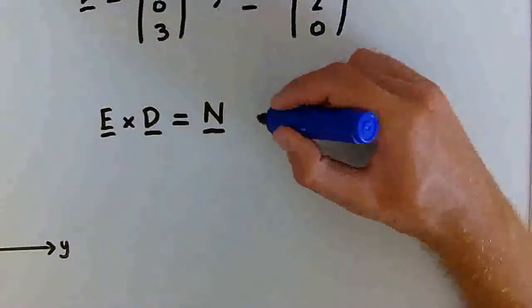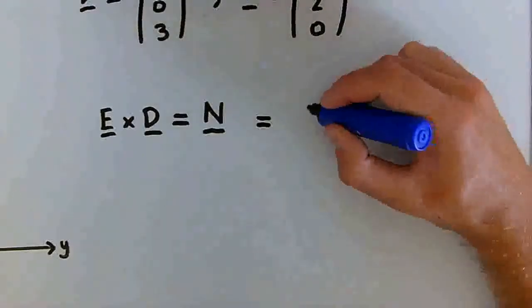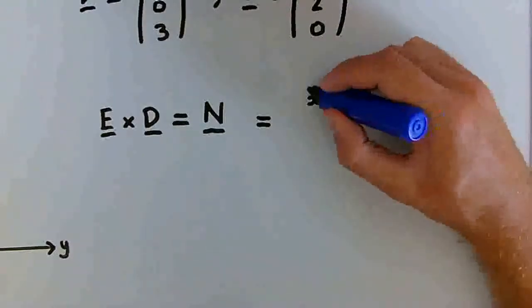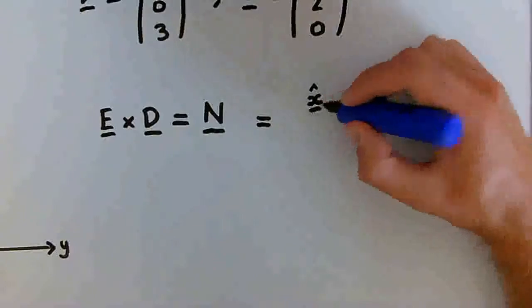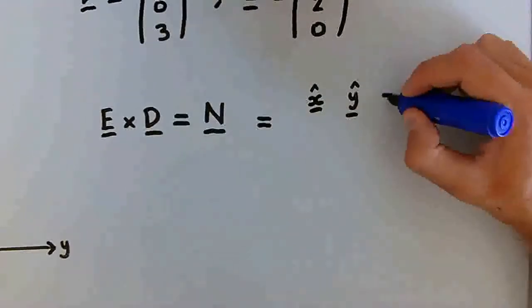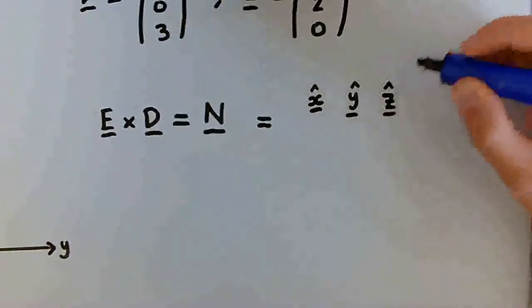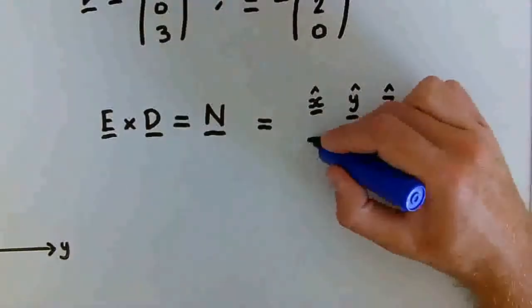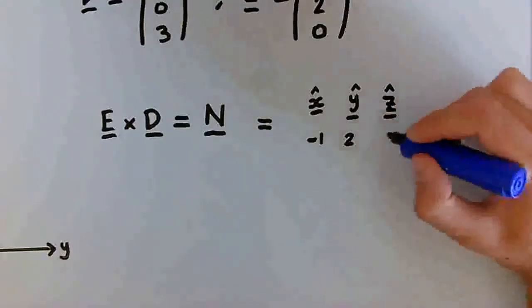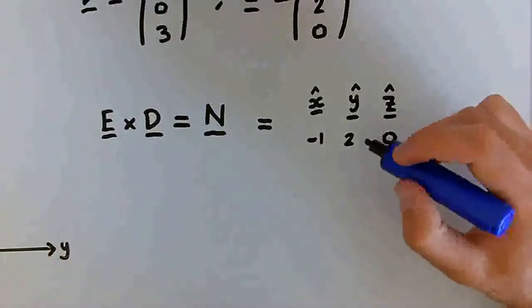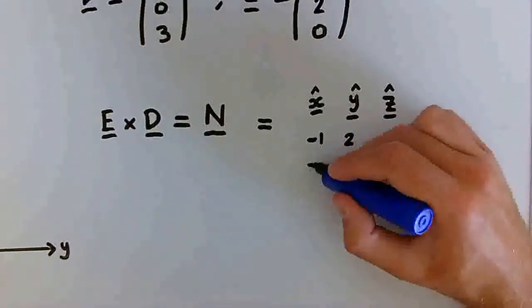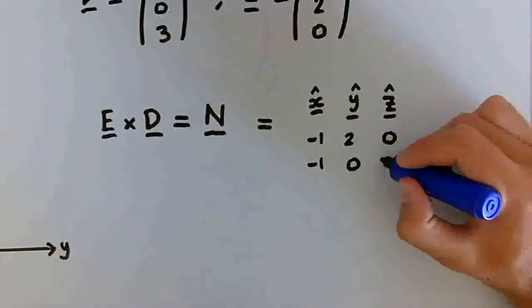So now we can work this out as we normally would using the determinant. We'll start with the basis vectors in the first row: x-hat, y-hat, and z-hat. And the vector E, so we have -1, 2, 0. And the vector D, -1, 0, 3.